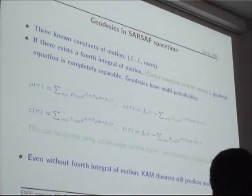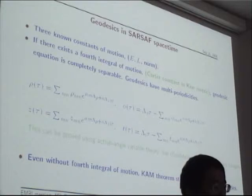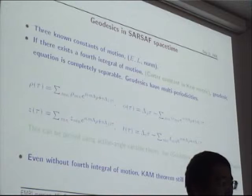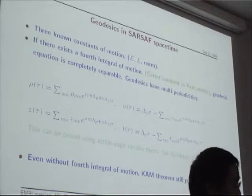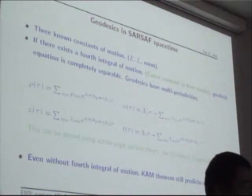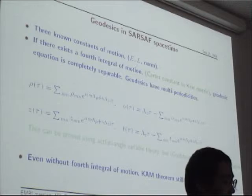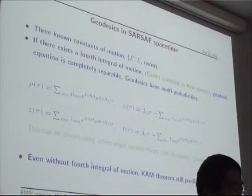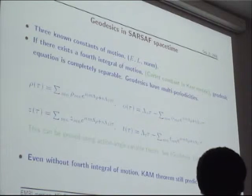Let's consider the geodesics in this spacetime. We have three known constants of motion: the energy, the angular momentum, and the norm of the four-velocity, if we use proper time as the affine parameter. If there exists a fourth integral of motion — for example, the Carter constant in Kerr spacetime — then the geodesic equation is completely separable and can be solved using the action-angle variable theory, as described in Goldstein's classical mechanics textbook in chapter 10.